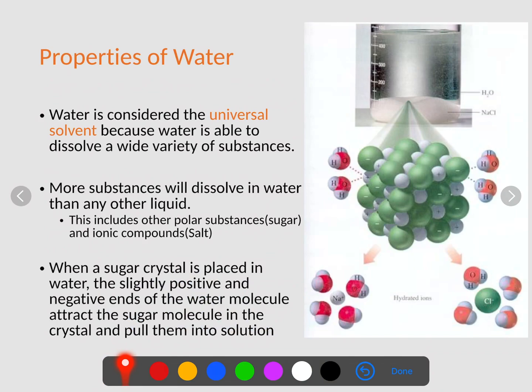Now water is also considered the universal solvent, which means water is able to dissolve a wide variety of substances such as sugar, salt, things along those lines. More substances will actually dissolve in water than any other liquid. This includes polar substances and even ionic substances, like sugar as well as salt. When sugar crystals are actually placed in the water, the slightly positive and negative ends of the water molecules attract the sugar molecule in the crystal and pull them into the solution.